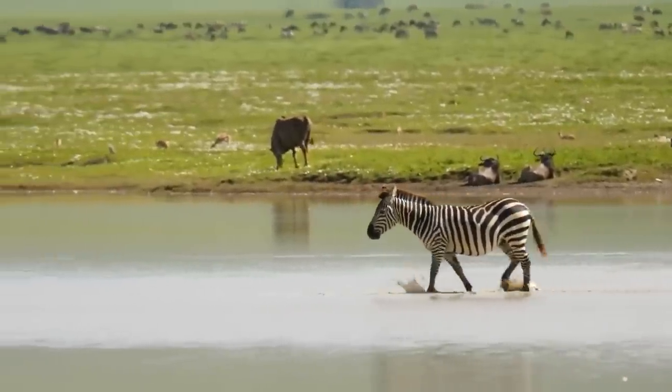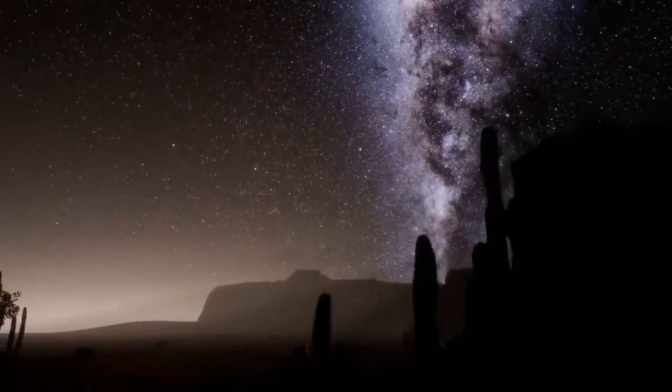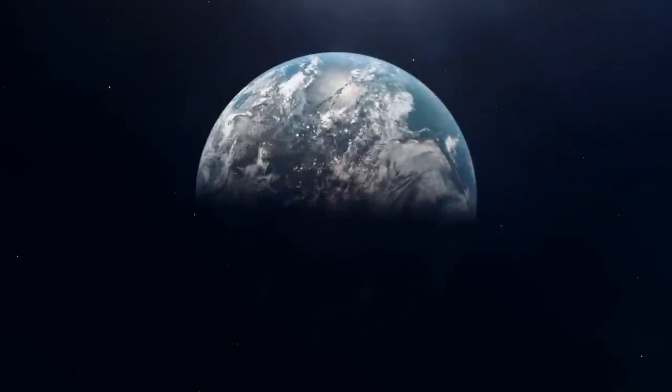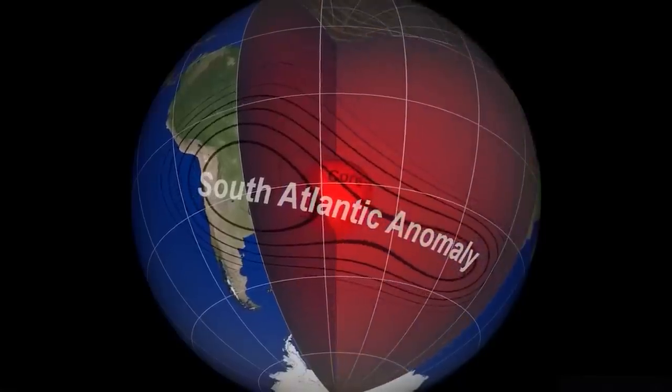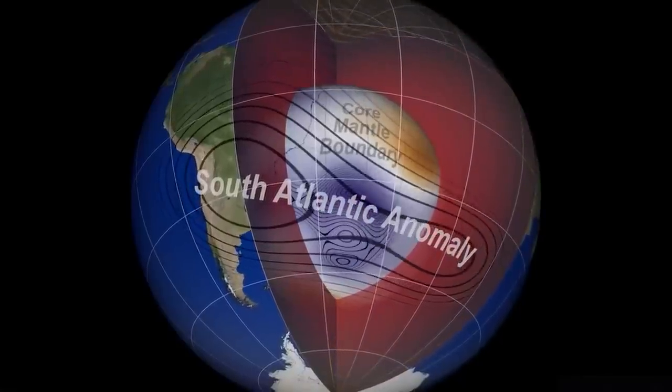In 2020, satellite data from the European Space Agency unveiled that the South Atlantic Anomaly is splitting into two separate cells, each representing an independent center of minimal magnetic intensity.